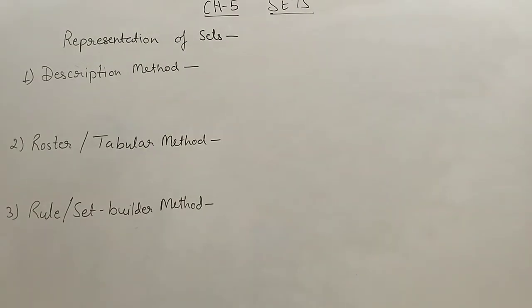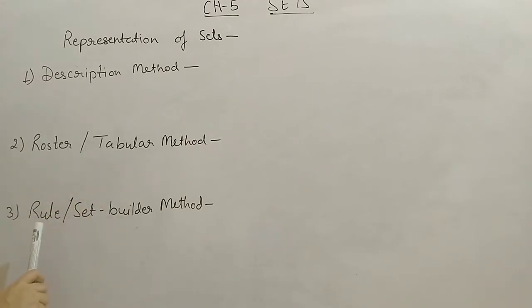Next, we have representation of sets. Sets can be represented by three methods. First one is the description method. Then the roster or tabular method. And the third one is the rule or set builder method.